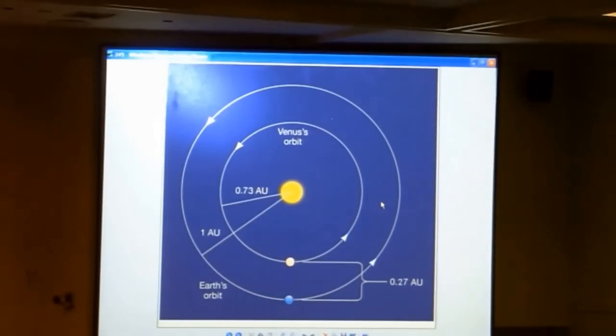So if there's some way that we can measure the distance between Earth and Venus at closest approach in actual units, something like meters or kilometers, then we can figure out how many meters or kilometers are in one astronomical unit. And then we know the actual absolute physical distance to everything else orbiting the Sun, because we already know those distances in astronomical units.